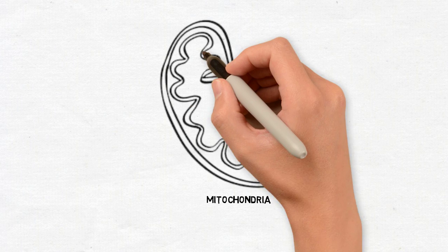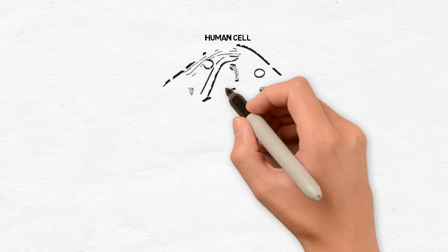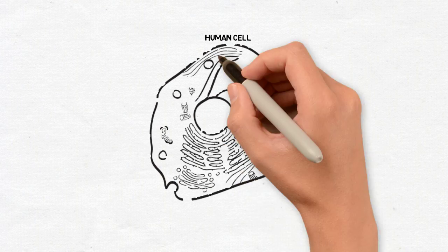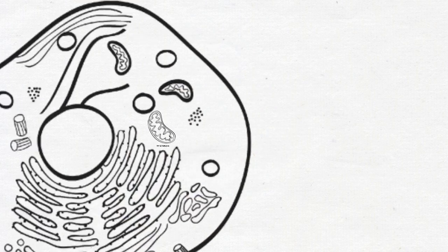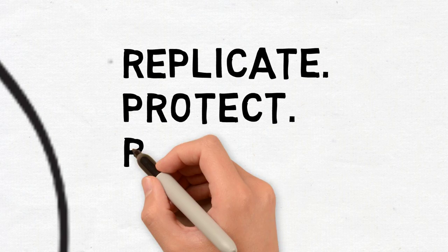Within the cells of plants and animals are tiny organelles called mitochondria, which provide energy to the organism, and they are under an increasing threat. Mitochondria convert glucose sugars into the fuel that allows cells to replicate, perform their assigned tasks, protect and repair themselves.